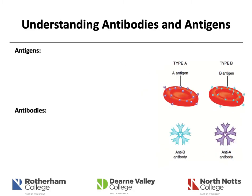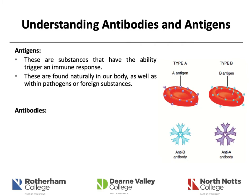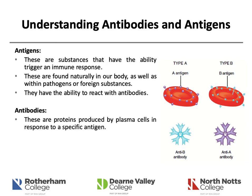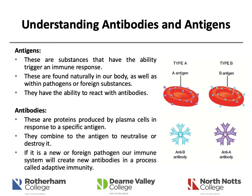To understand antibodies and antigens — particularly relevant in the context of COVID-19 — antigens are substances that trigger an immune response. They are found naturally in the body but also within pathogens such as COVID-19 or other foreign substances, and they have the ability to react with our antibodies. Antibodies are plasma proteins produced by cells within plasma; they respond to a specific antigen and attempt to combine with and neutralise or destroy it. If it is a new or foreign pathogen, our immune system will attempt to create new antibodies through a process called adaptive immunity, which you will explore further in infection and immunity.